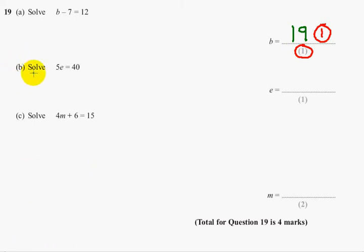Now part B says solve 5E equals 40. 5 times something equals 40. So we can divide both sides by 5. So E would equal 8. And that's also worth one mark.